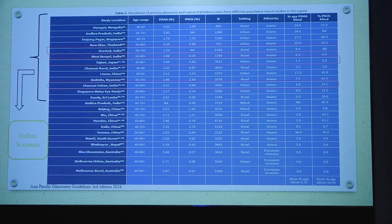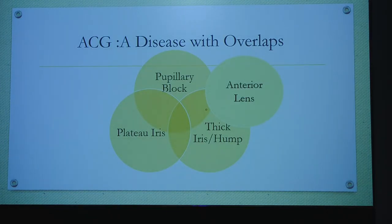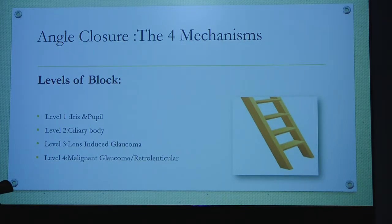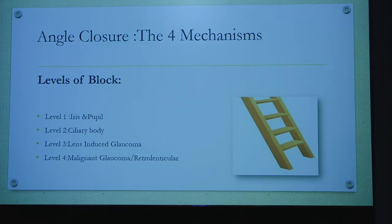The minute we talk about angle closure state, we need to understand what angle closure actually is. Basically, it is a disease of overlap — maybe at the level of pupillary block, plateau iris, position of the lens, or a thick iris or hump. The block could be at the level of the iris or pupil, at the ciliary body, at the lens causing lens-induced glaucoma, or the retrolenticular portion causing malignant glaucoma. Only if we are able to identify each structure can we identify the pathophysiology. In glaucoma, you know the pathology, you treat the disease — only controlling pressure is not enough. We need to be very clear and precise about the diagnosis.